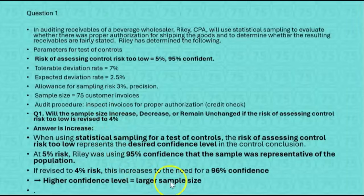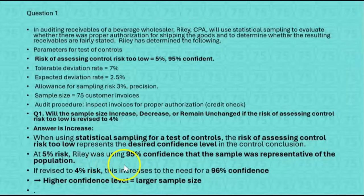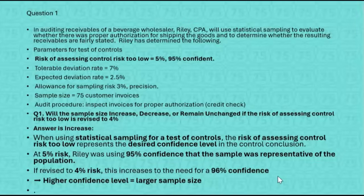Because when using statistical sampling for a test of controls, the risk of assessing control risk too low represents the desired confidence level in the control conclusion. At 5% risk, Riley was 95% confident that the sample was representative of the population. Revising to a 4% risk increases the need to a 96% confidence level. The higher the confidence level, the larger the sample size. So the answer is: sample size would have to increase.